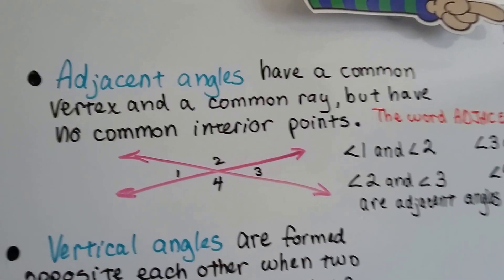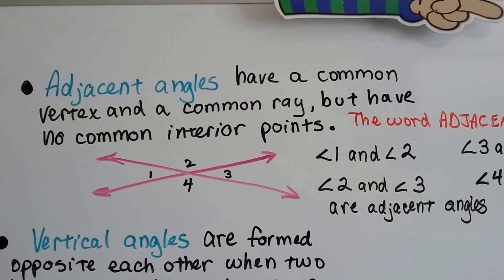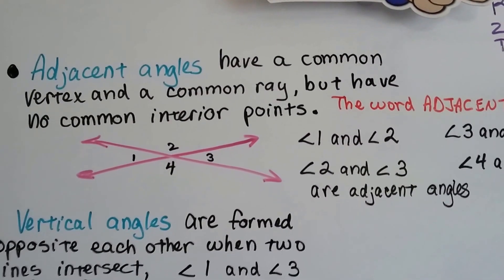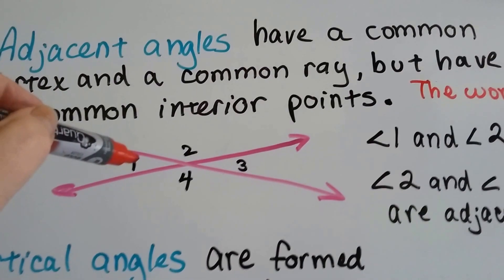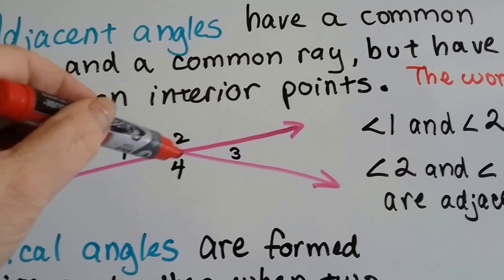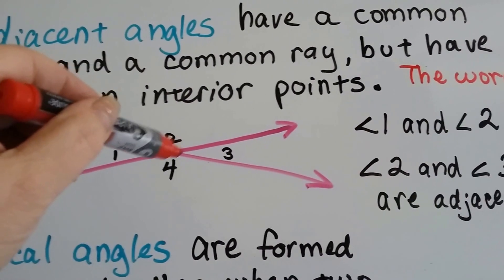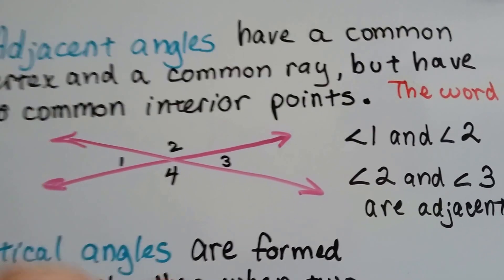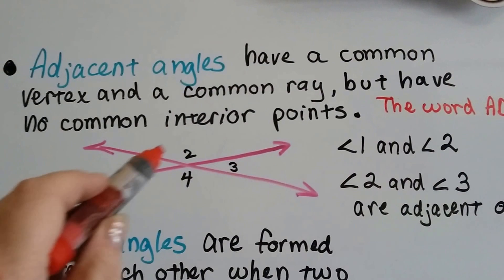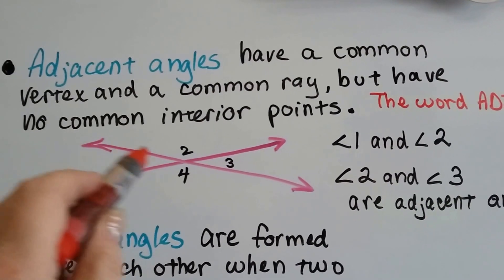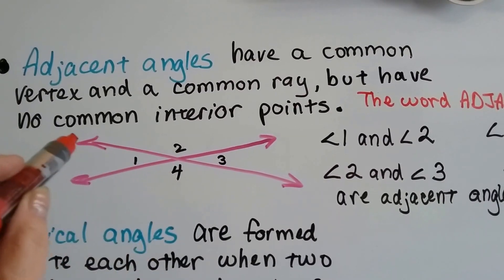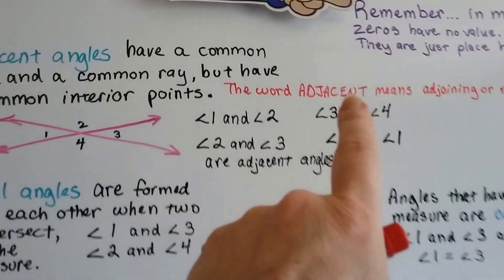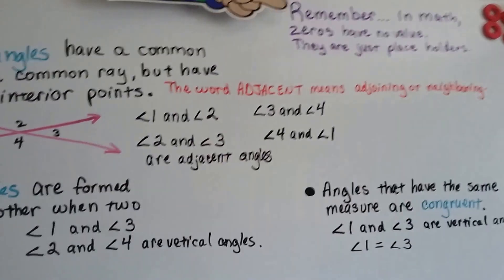Adjacent angles have a common vertex and a common ray, but have no common interior points. Here's the common vertex for angle 1 and angle 2. It's right here, this center where these two lines cross. And they have a common ray. Between angle 1 and angle 2, they share this line. So that's the common ray from this point in the center coming outward.